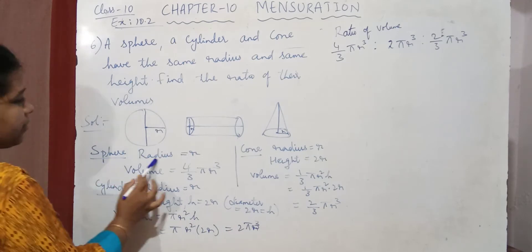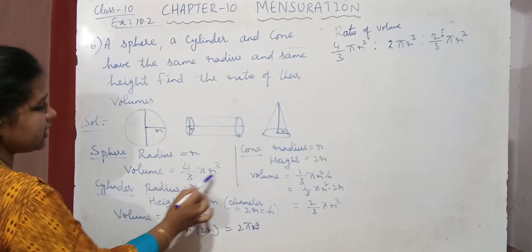So for the sphere, if I am taking radius r, we know the volume formula is 4 by 3 pi r cube.